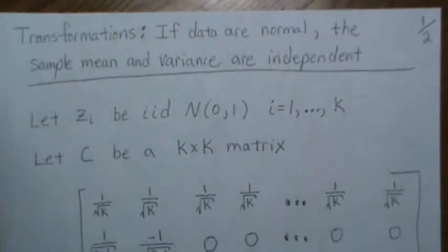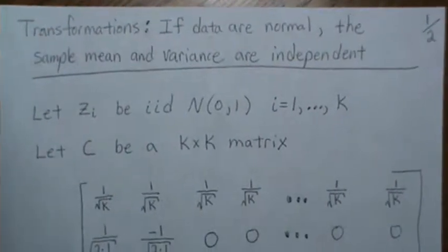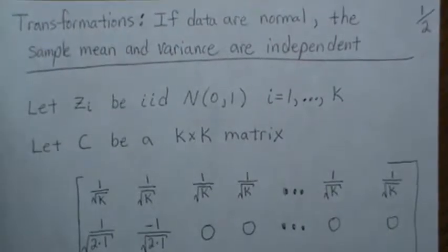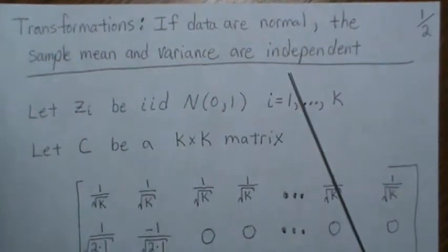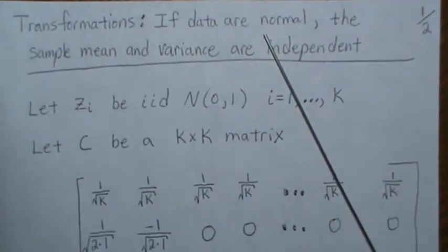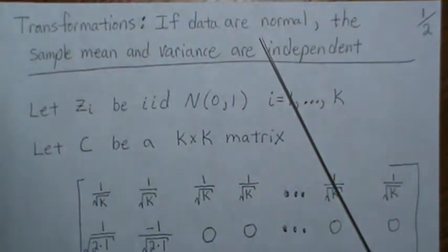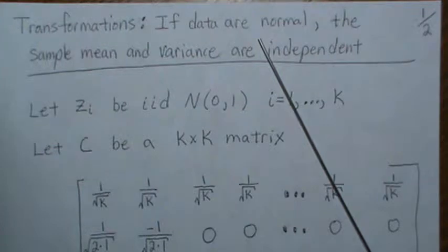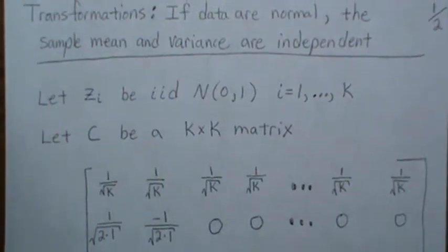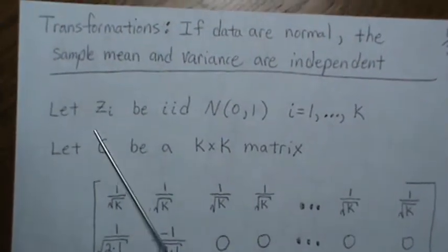Hello, this is the next video in a series I'm calling 'Transformations of Random Variables.' We're in the linear transformation phase of this mini-series, and here we're going to show that the sample mean and variance are independent if our data are normal. We'll use the previous two videos: an orthogonal transformation of normal random variables is again normal, and the properties of orthogonal matrices.